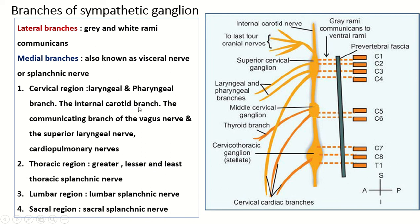In the cervical region, the visceral nerve or splanchnic nerve is known as the laryngeal or pharyngeal nerve branches, internal carotid branches, communicating branches of the vagus nerve, superior laryngeal nerve, and cardiopulmonary nerve. In the thoracic region there are three nerves: greater, lesser, and least thoracic splanchnic nerves. In the lumbar region there are lumbar splanchnic nerves, and in the sacral region, sacral splanchnic nerves.